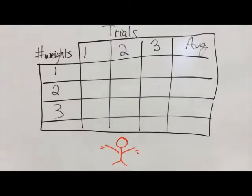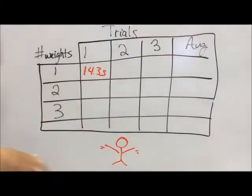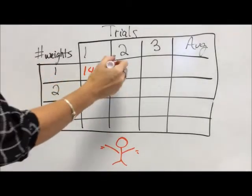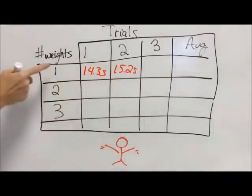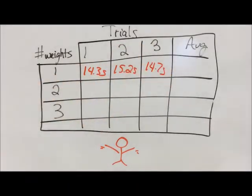I send it down the ramp and we get 14.3 seconds. Second trial: 15.2 seconds. Third trial: 14.7 seconds. So now I've done three trials with one weight, and you can see the times are all different. That's why we have to do things multiple times to get an average.